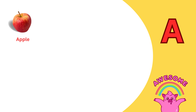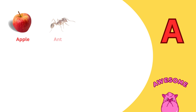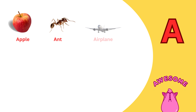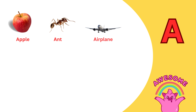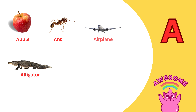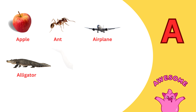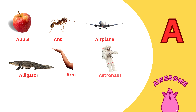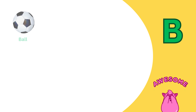A is for apple. A is for it. A is for airplane. A is for alligator. A is for arm. A is for astronaut.